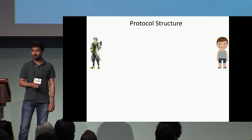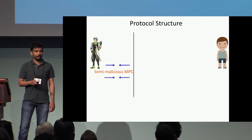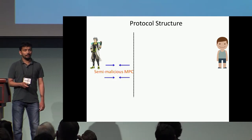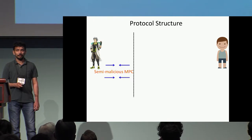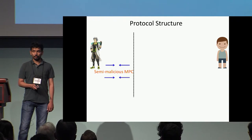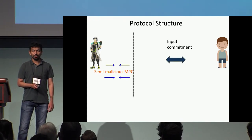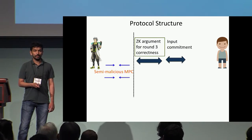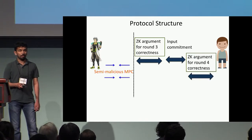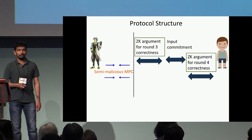At a high level, our protocol follows the GMW paradigm. We take a semi-malicious MPC protocol and place it in the third and fourth rounds of our round-optimal malicious-secure protocol. Parties must prove they behaved honestly in the underlying semi-malicious MPC. To do so, each party commits to its input and gives zero-knowledge arguments of correct behavior — a three-round ZK argument for the first round, and another proof in the fourth round for the second round of the semi-malicious MPC.